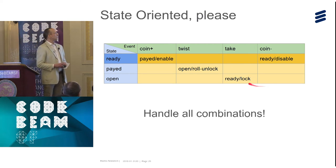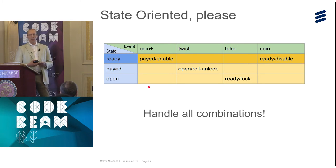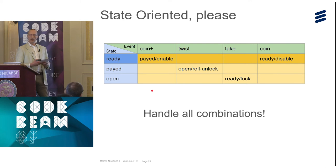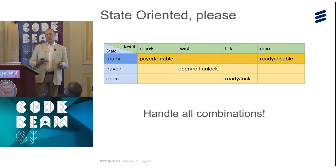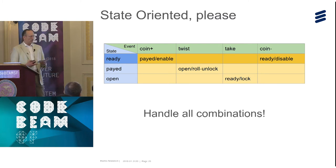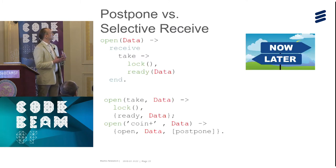Another thing that helps is selective receives. The solution to handling an unwanted event — like 'coin_plus' in state 'open' — might simply be: I'll handle it later. With gen_fsm, you had to handle all events immediately because the behavior has to be ready for the next system event. So you get the event shoved at you and don't want it — you might reject it or write your own queue. In gen_statem, you can postpone an event instead, which is the replacement for selective receive.